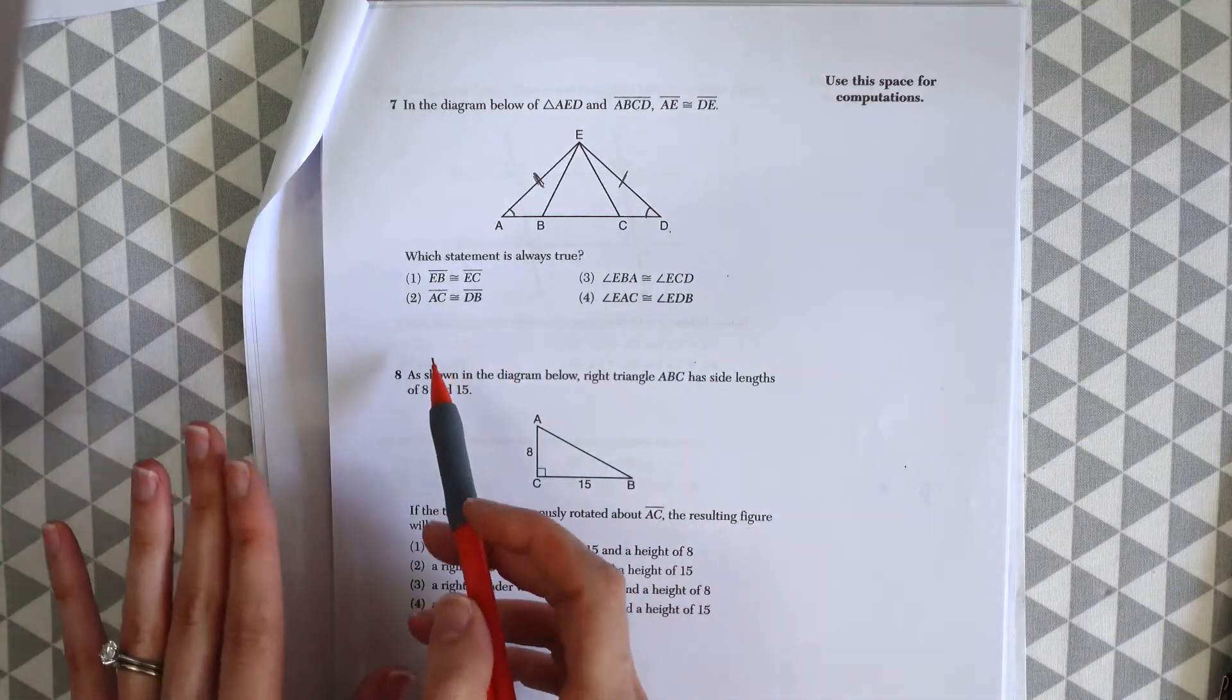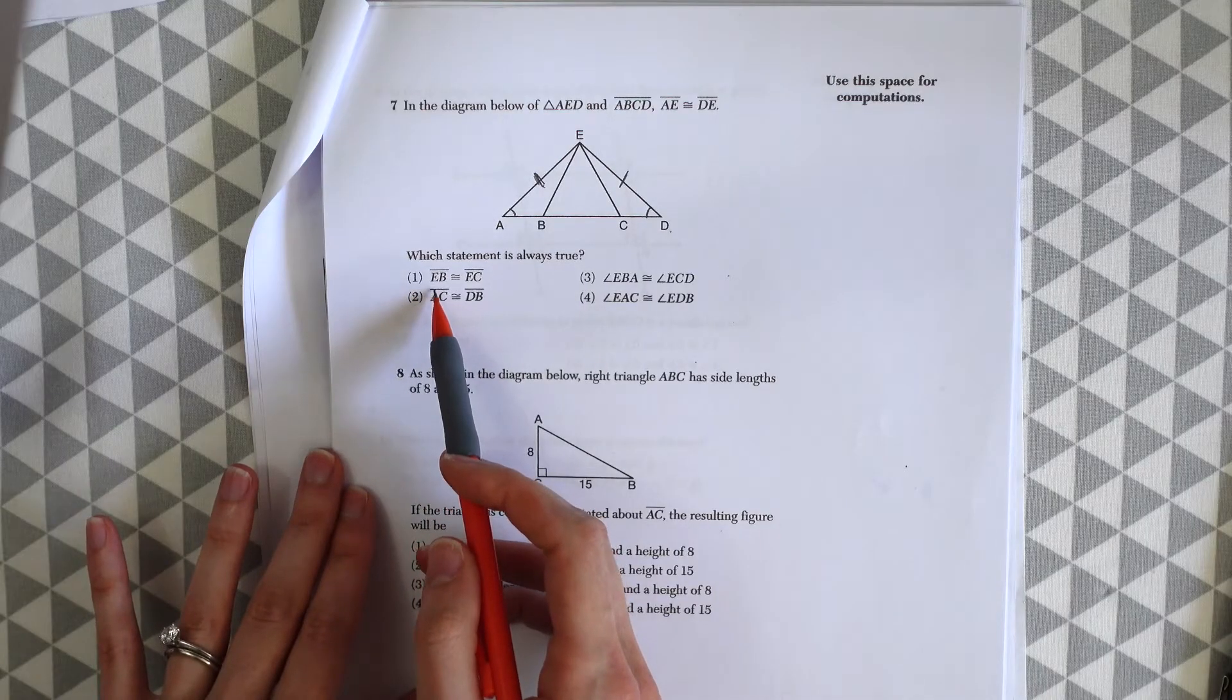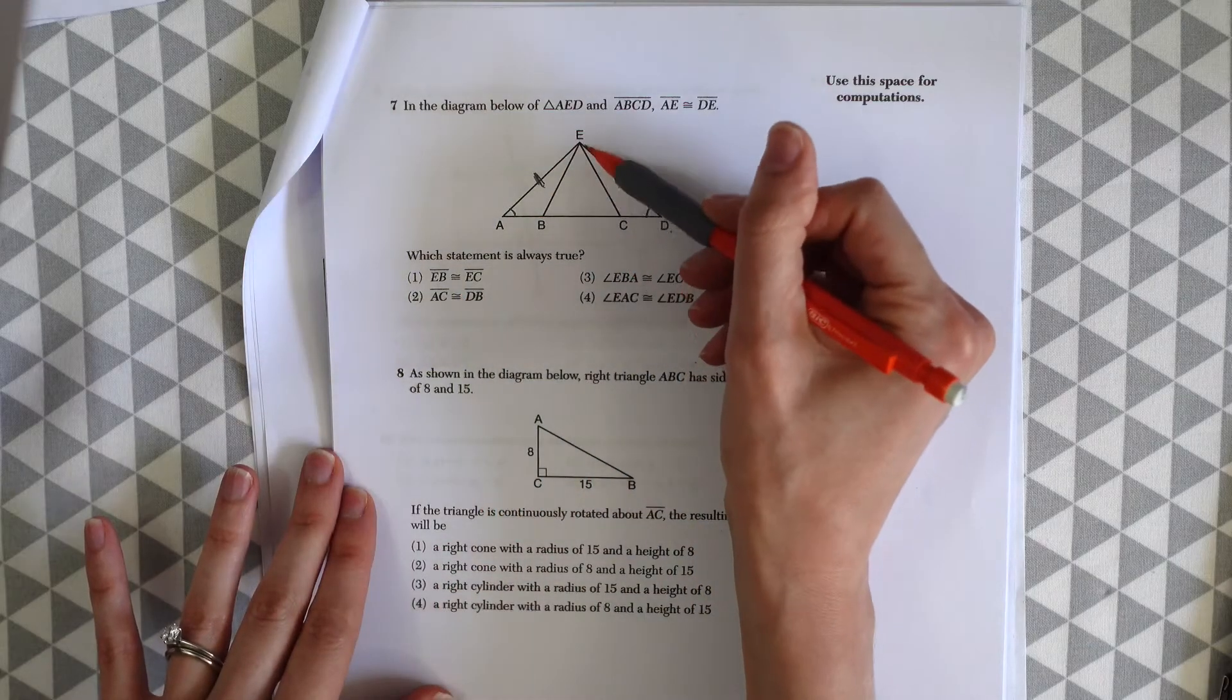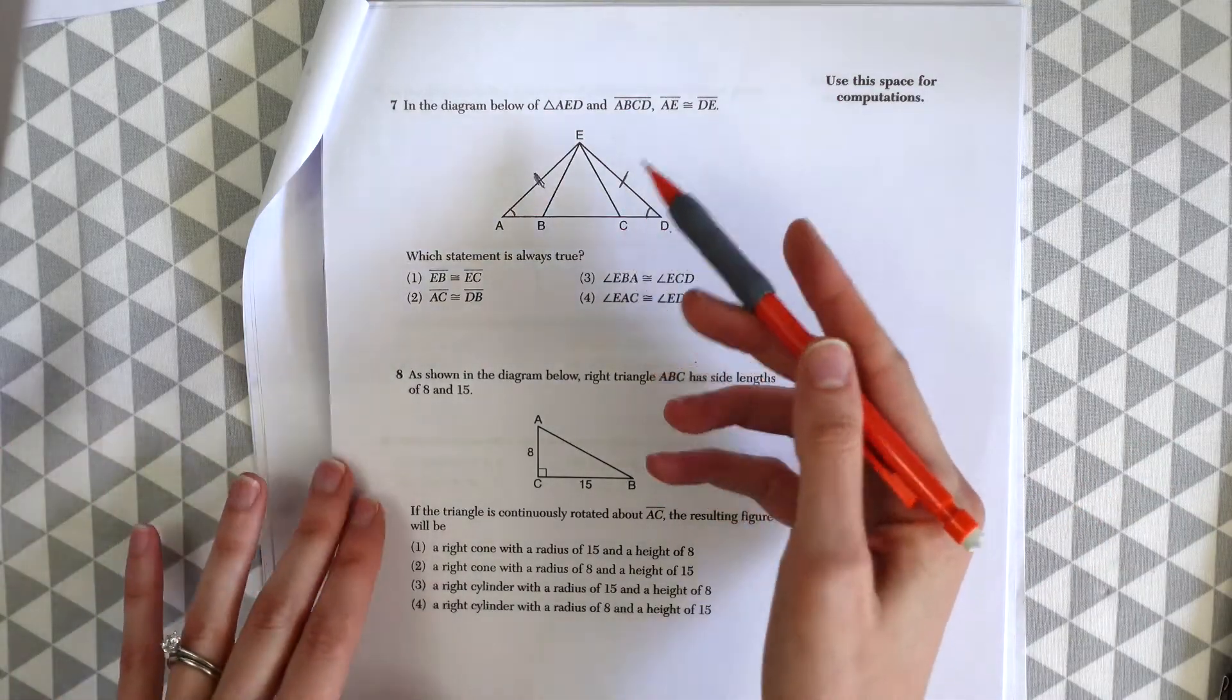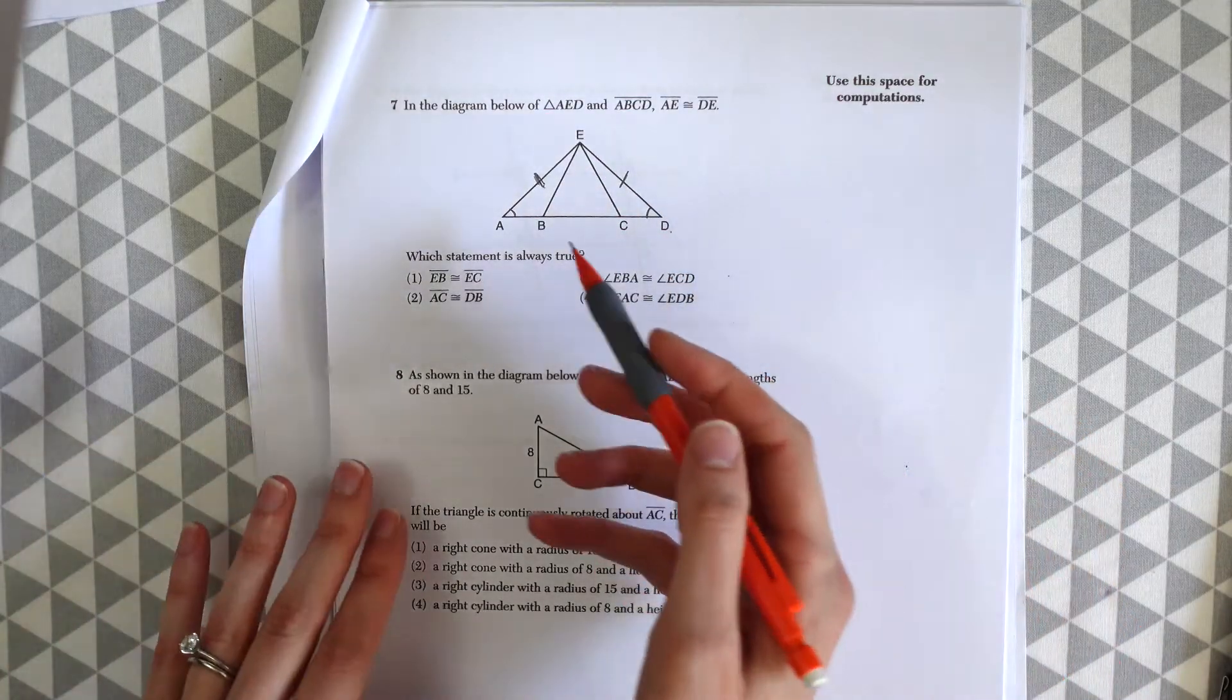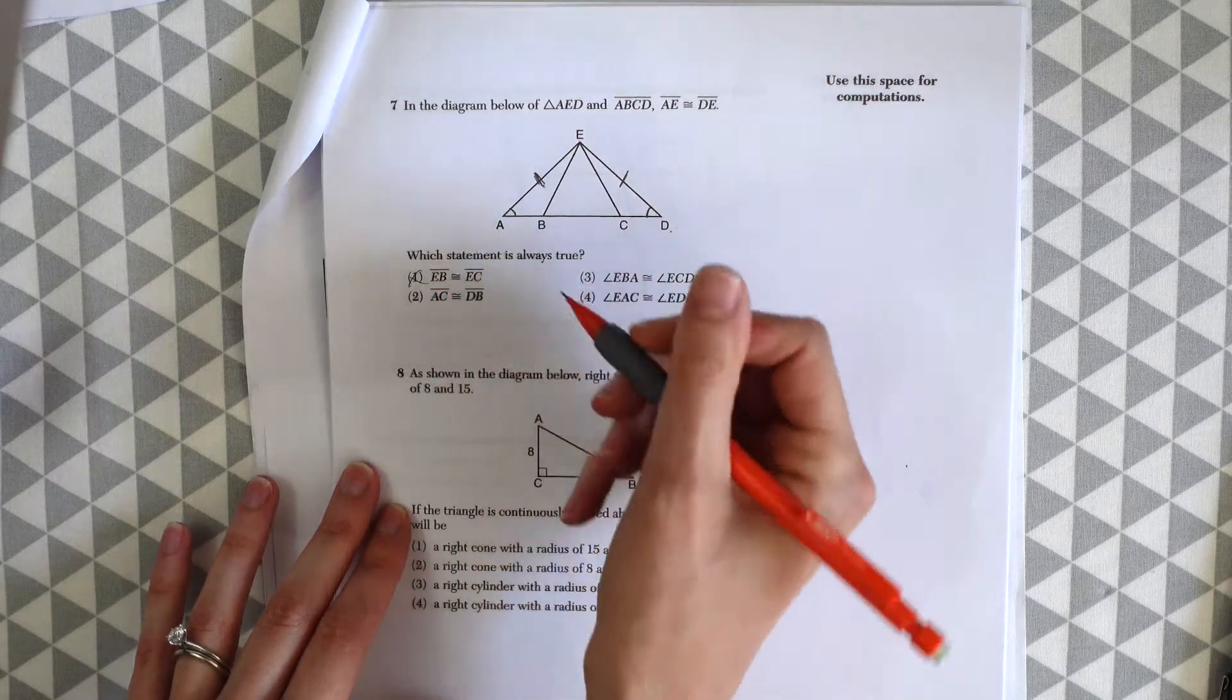If we look at choice one, it says EB is congruent to EC. So that looks right, but they don't give any information that tells us that that could be true. So that's not the answer.